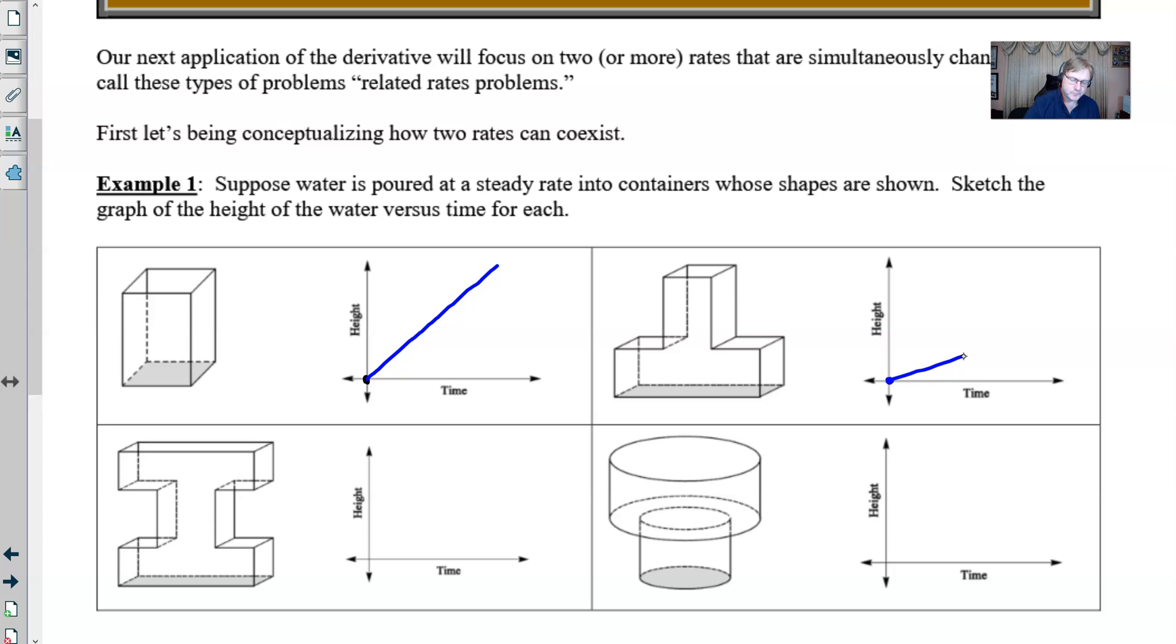In other words we won't have as steep of a line but it's still going to be a line nonetheless. Now as soon as we reach the water level right about here then things begin to change. As that water is still poured in steadily we're going to find that our height is increasing a little bit faster because we don't have as much width to contend with and so that would be depicted by still a linear graph but one that's going to be a bit steeper.